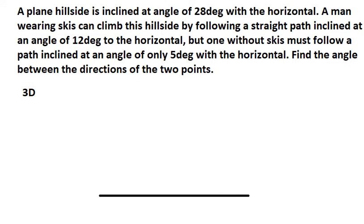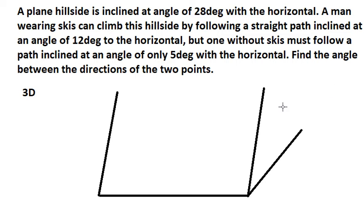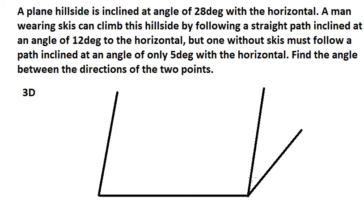Here is the plane. Let's say the angle of the hill — that is about 28 degrees. A person wearing skis will go in this way, from the bottom of the hill going from here to here.